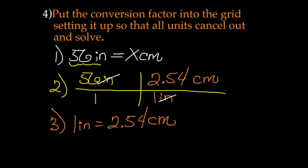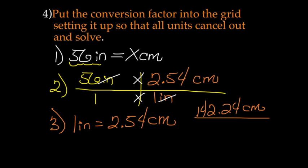Now the way to read this grid is you multiply the things across the top, and multiply across the bottom, then divide. So we have 56 times 2.54, which gives 142.24, and 1 times 1 equals 1 on the bottom. Since we're dividing by 1, we can ignore it, giving us an answer of 142.24 centimeters.